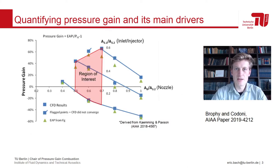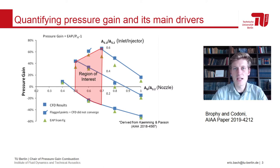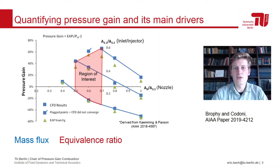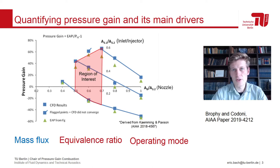This method was tested numerically and experimentally with RDC designs spanning a range of injector area ratios and outlet throat area ratios. Both were found to play a key role in the calculated pressure gain. Brophy and Codoni also defined a practical region of interest for these parameters. But other drivers do exist: propellant mass flux as a measure of thermal power, the equivalence ratio as a measure of available chemical energy, and the operating mode that embodies the dynamics of this device. In the present study, we will focus on the two area ratios and mass flux.